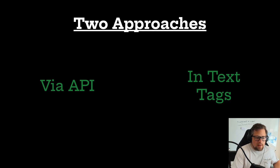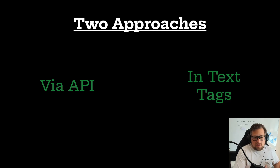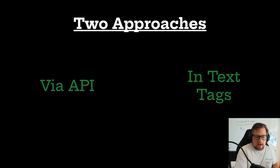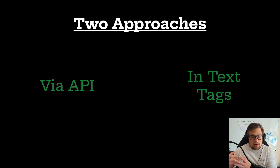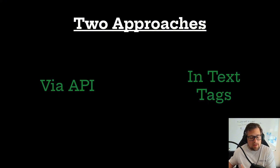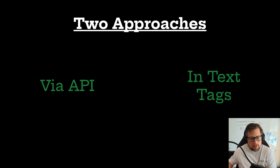There are the via-API ones, which when a lot of people talk about tool calling, it's function calling done via API configuration. You can define your functions and basically orchestrate how the LLM and the client talk to each other back and forth. Then there is the approach that Roo Code uses, which is in-text tagging. I think there are pros and cons to both of these approaches. While in-text tags give you a wide range of capabilities, there is some downside to it.